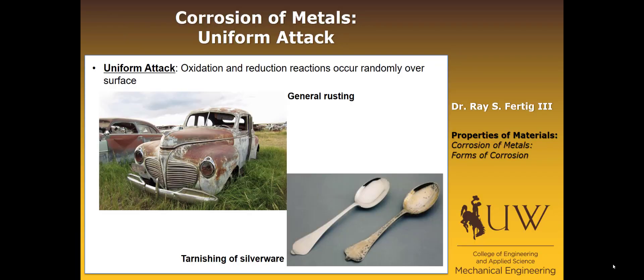The first is just what's called a uniform attack. All that is, is that you have oxidation and reduction reactions that are occurring randomly over the surface. This is what you typically see when you look at a rusted car in the field, or if you have real silverware as opposed to the fake stuff — the silver will tarnish, kind of turn black. That's an example of a uniform attack.